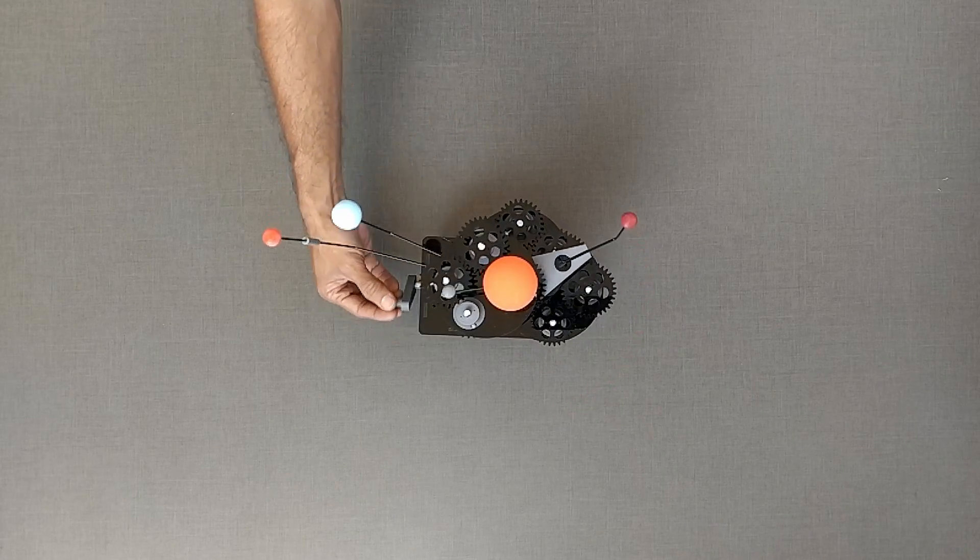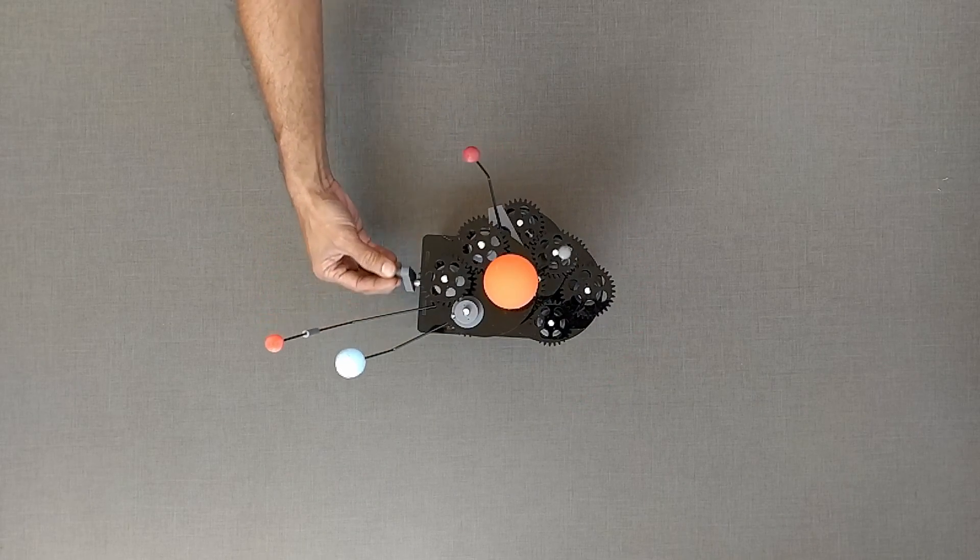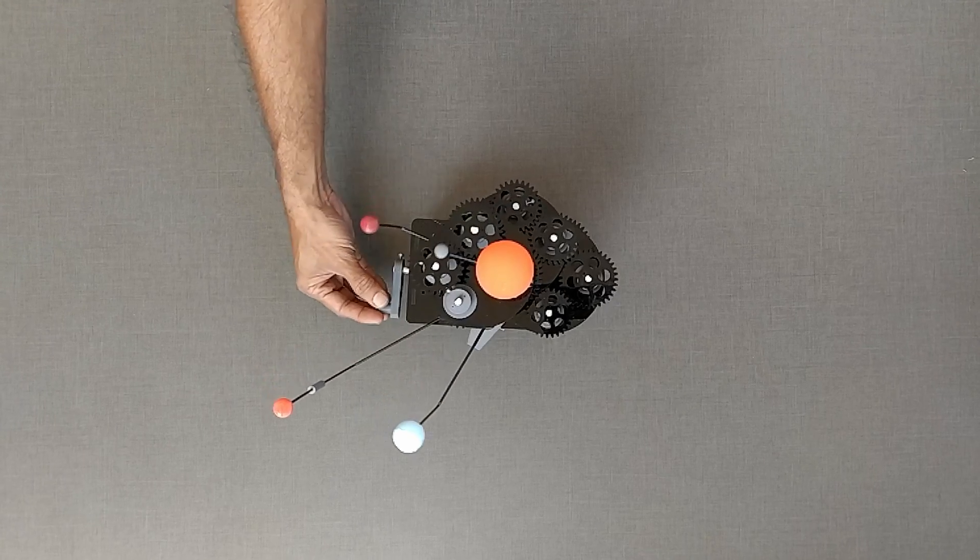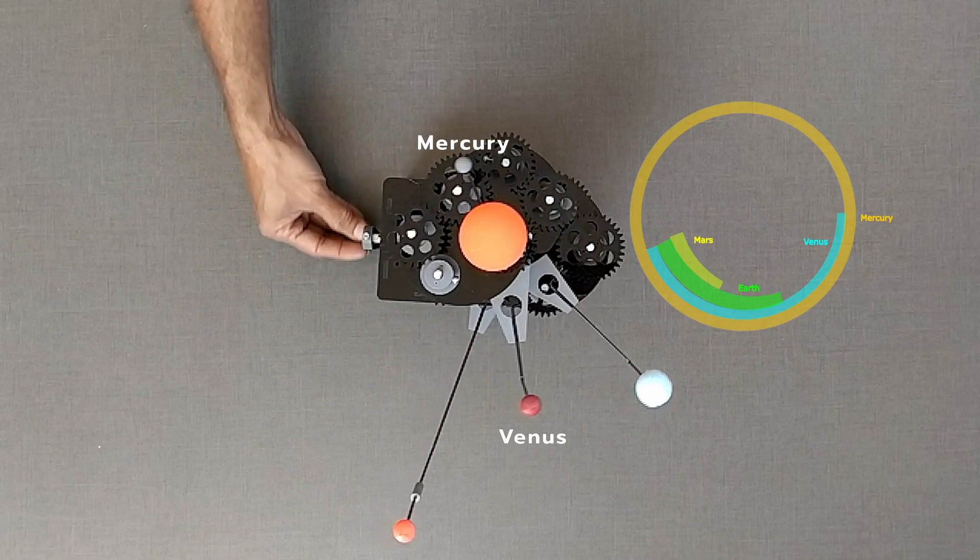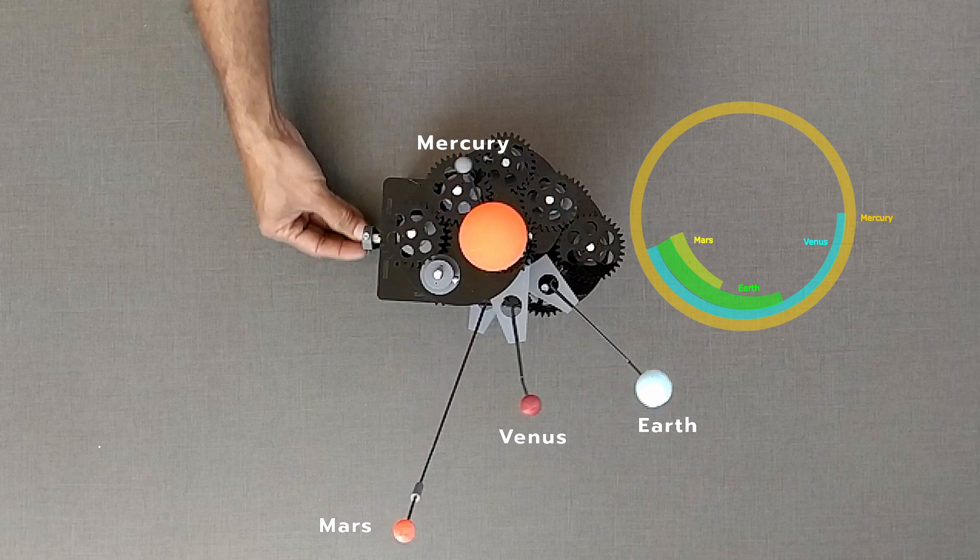Mercury completes one revolution around the Sun with two rotations of the handle. During this time, Venus moves 0.39 revolutions, Earth 0.24 revolutions, and Mars 0.12 revolutions only.